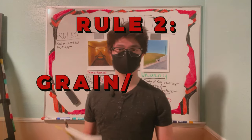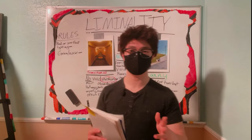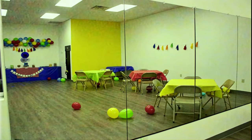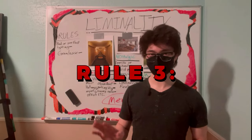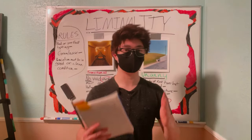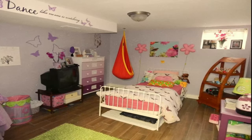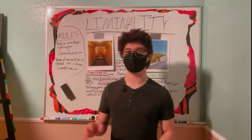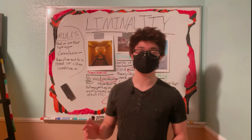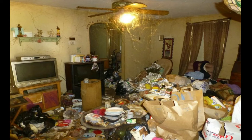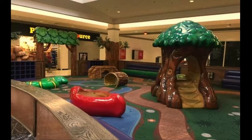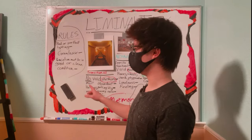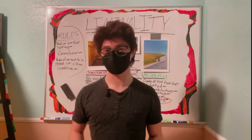And then finally, rule three: the selected location must be in either very clean or just good condition. There's a reason why you don't get a feeling of liminality when looking at a picture of a mall or house that's trashed. The area that you take a picture of needs to feel like it was being used or was abandoned that very second. Pretty simple rules to follow, but now let's talk about equipment.